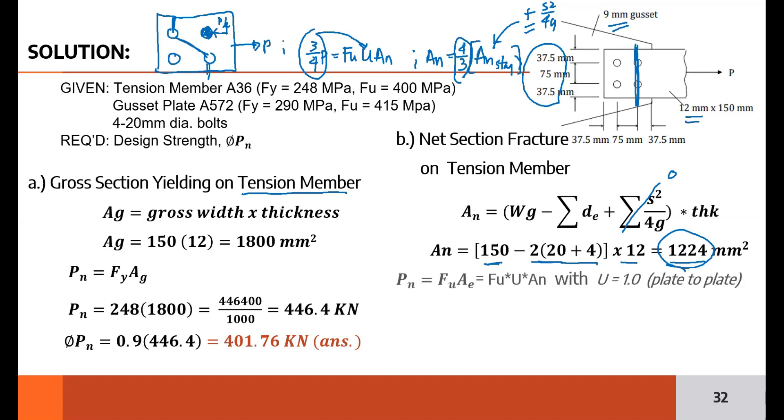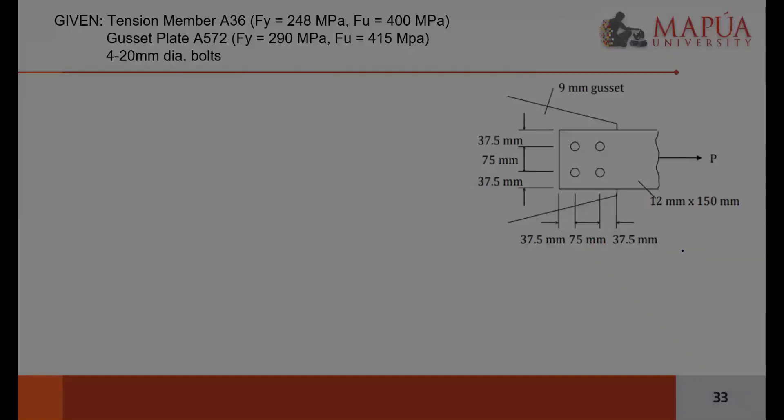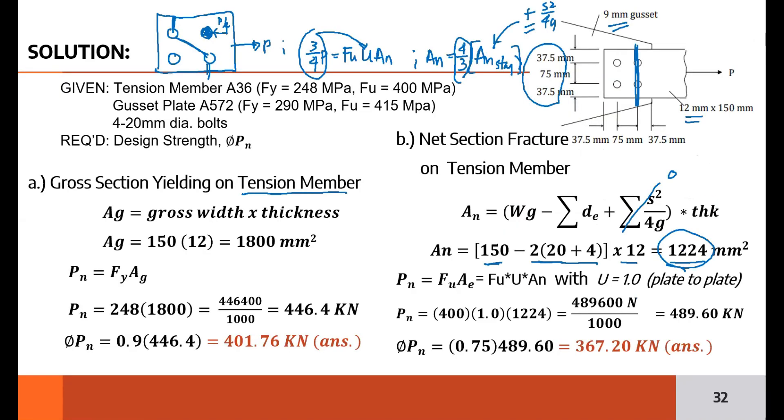What's AN staggered? It's 150 minus 2 holes, plus you add S squared over 4G because it's staggered. When you add, the net area increases even more. So even without computing, I'm sure the net area when you consider staggered will be larger than the 1224 I have here. So I didn't include it in the solution. But you should understand that you can consider staggered failure in NSF. Clear? Assuming that's our critical net area. Then capital U is 1 because it's plate to plate, no shear lag. So that's our Pn. To get the design strength, multiply by 0.75 for NSF. So that's the design strength, finished with letter A and B.